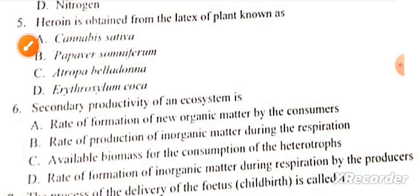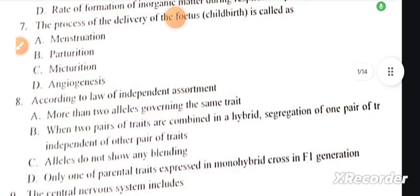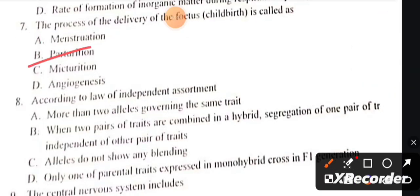Secondary productivity of an ecosystem is the rate of formation of new organic matter by consumers. Question number seven: The process of delivery of the fetus is called parturition. According to the law of independent assortment, alleles don't show any blending.